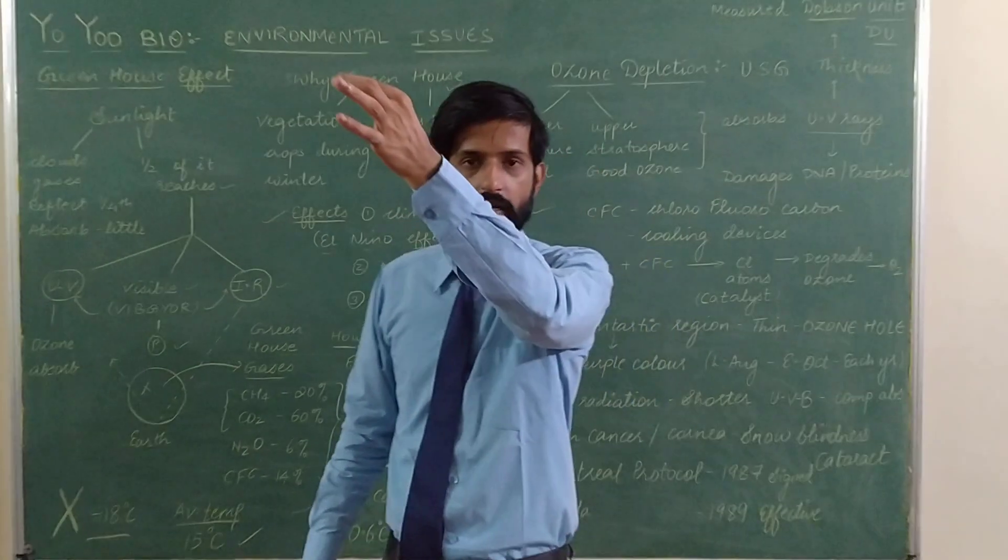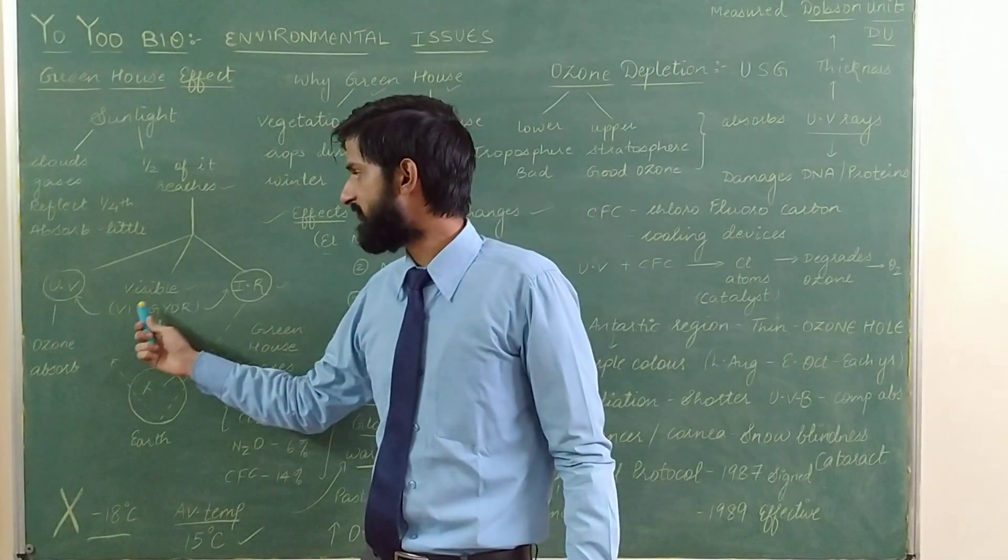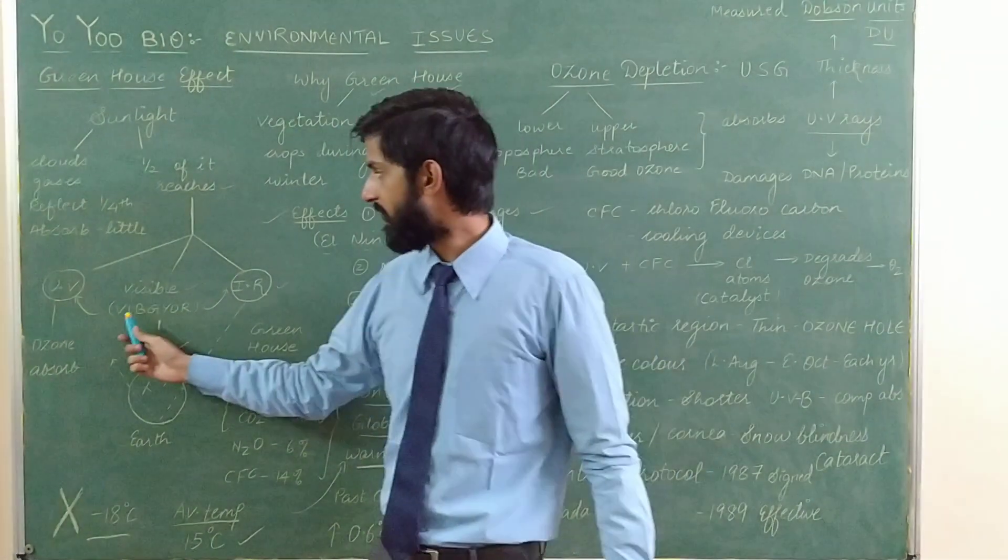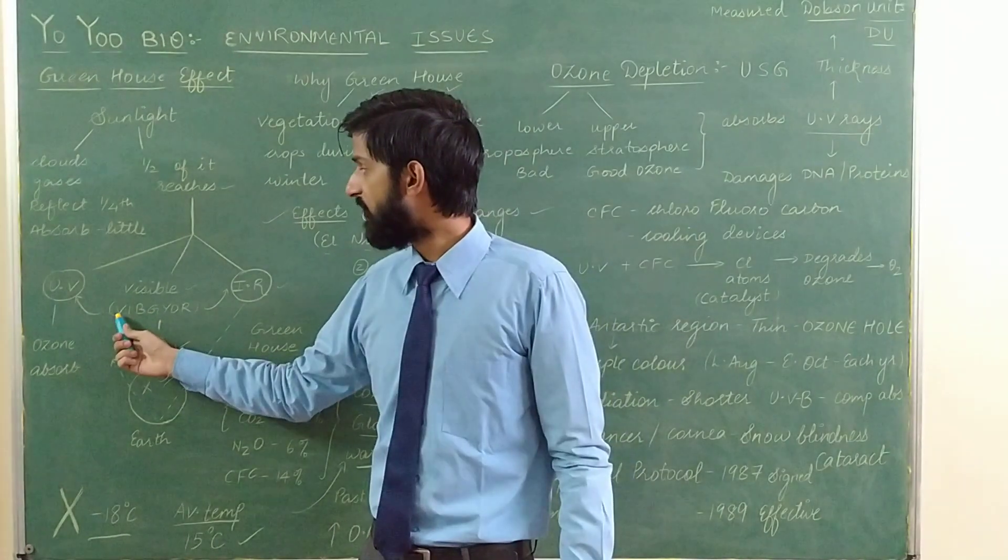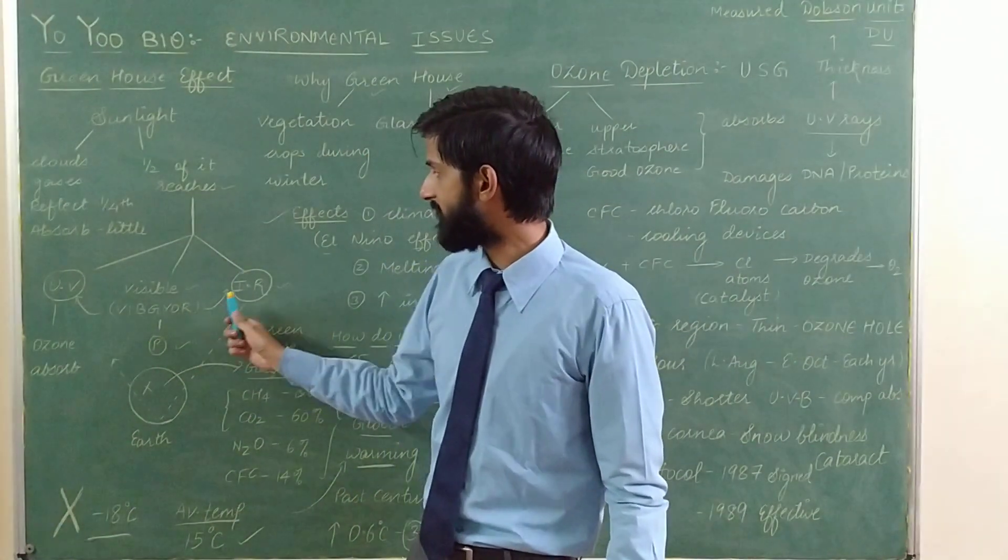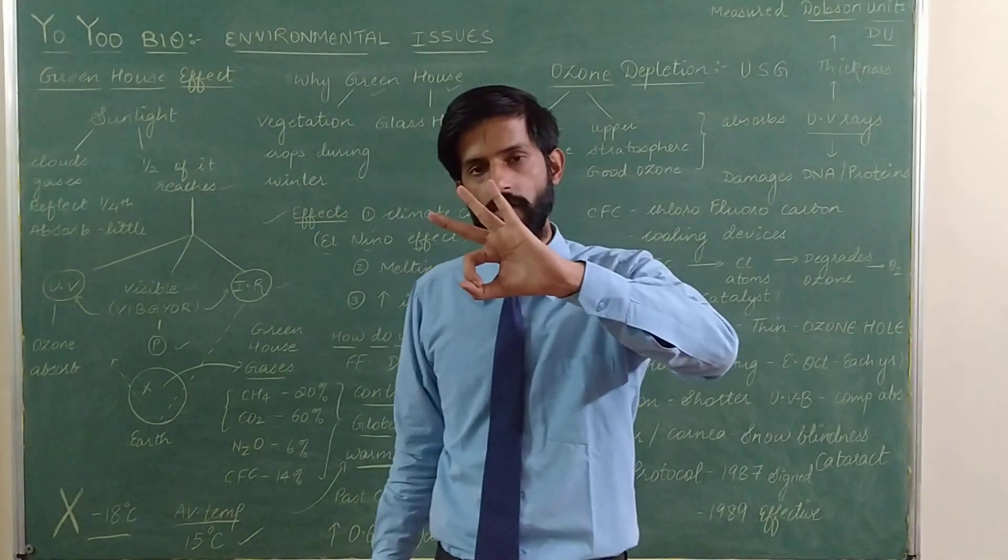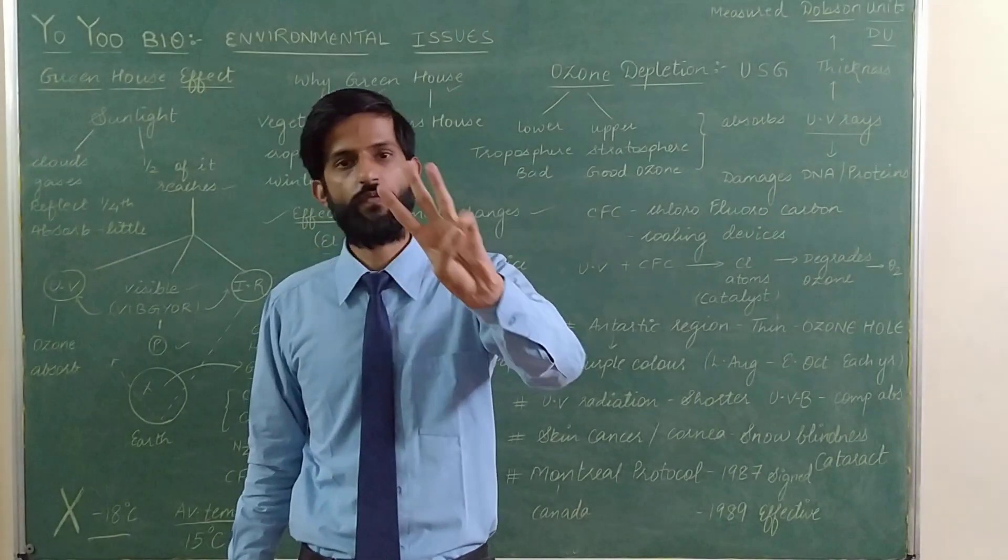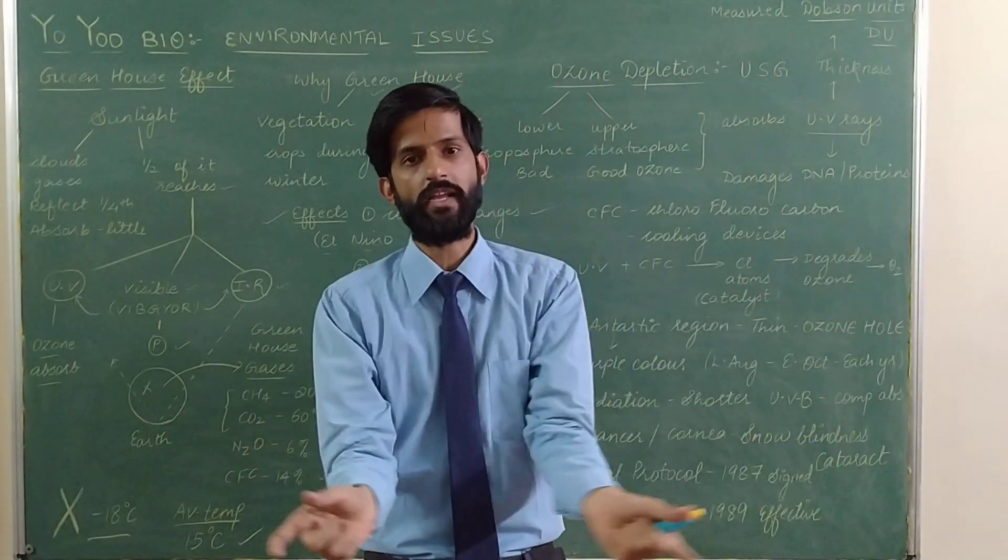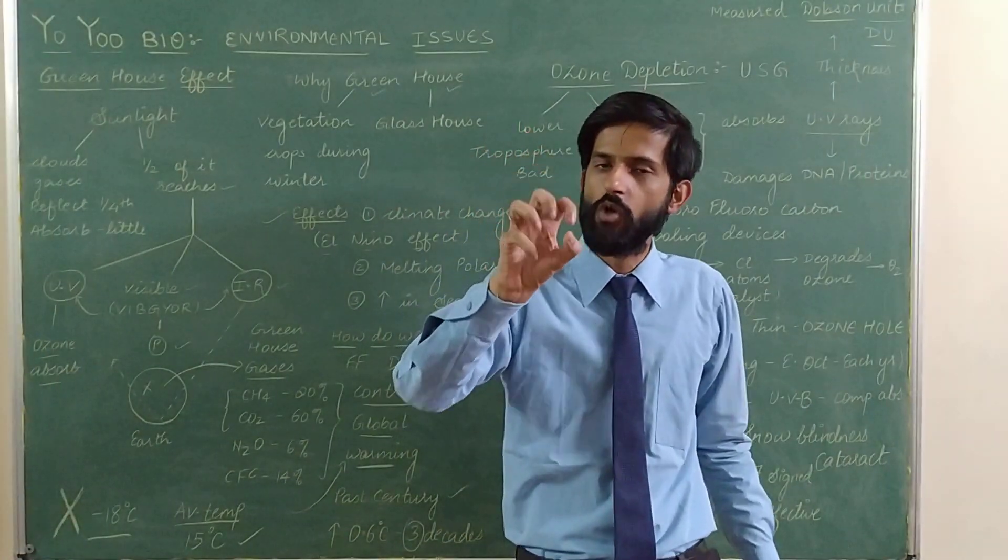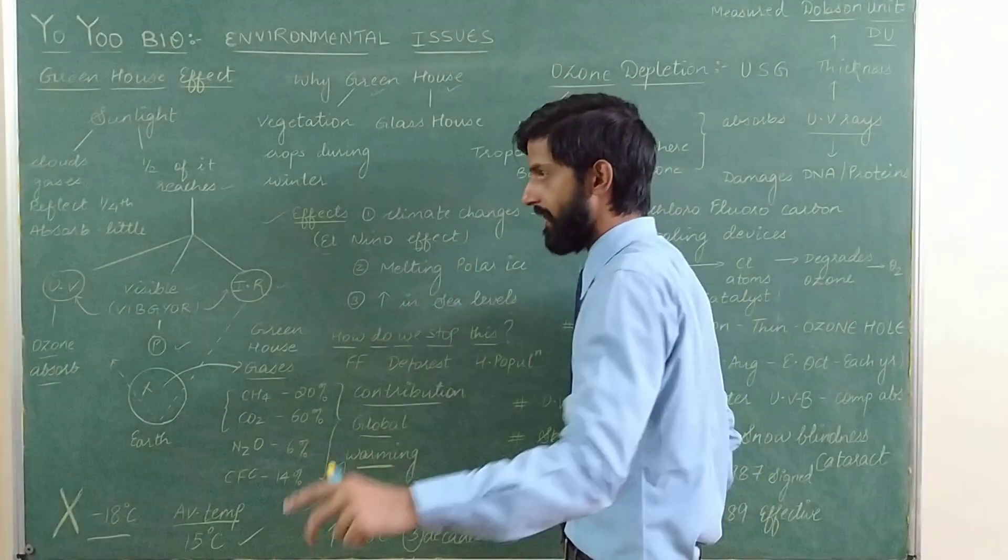Now, the sunlight coming to our planet Earth has three components. There is the visible component which is seven colors - VIBGYOR. That is violet, indigo, blue, green, yellow, orange, red. Then there is ultraviolet and infrared.